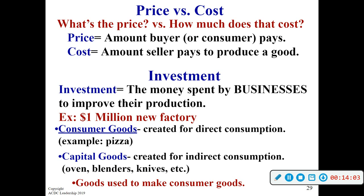Price is associated with what we call the consumer. When you go to Walmart and buy something, you're acting as a consumer — you have demand for a product and you pay a price. If you produce, make, or sell something, you have a cost of production. So price is associated with the consumer; cost is associated with the producer. We'll get into production costs in unit three.